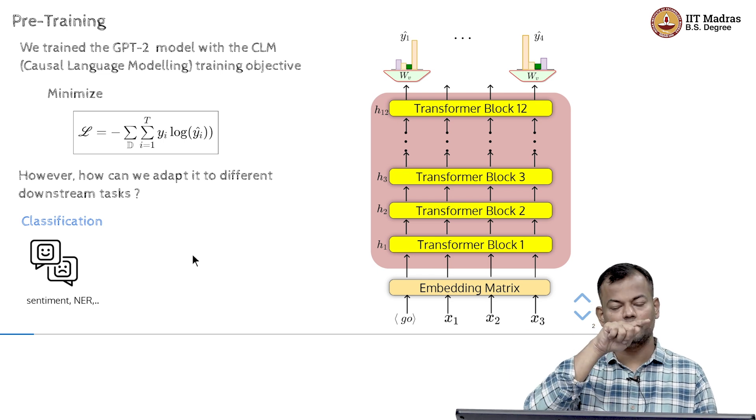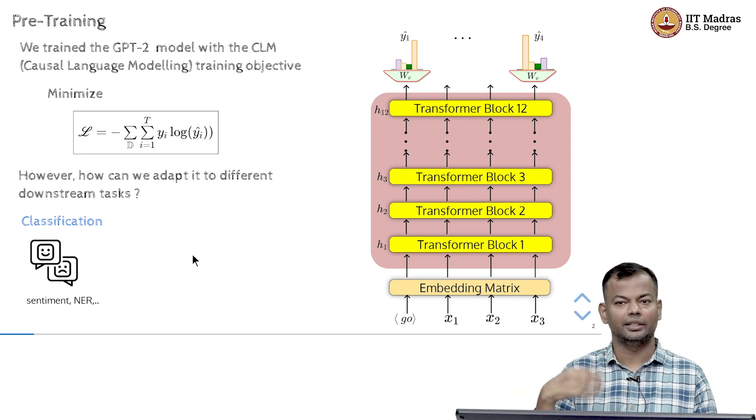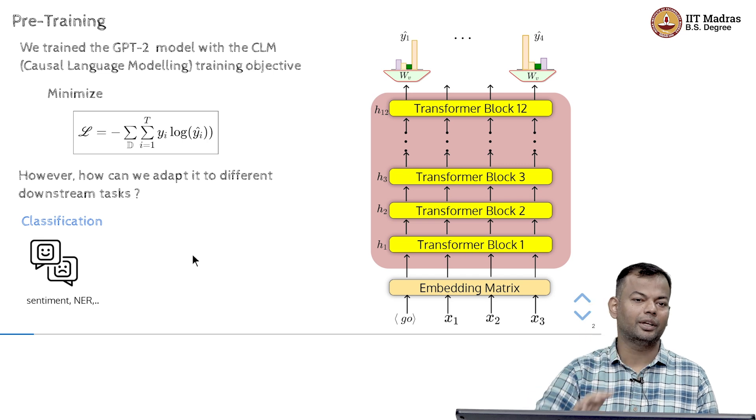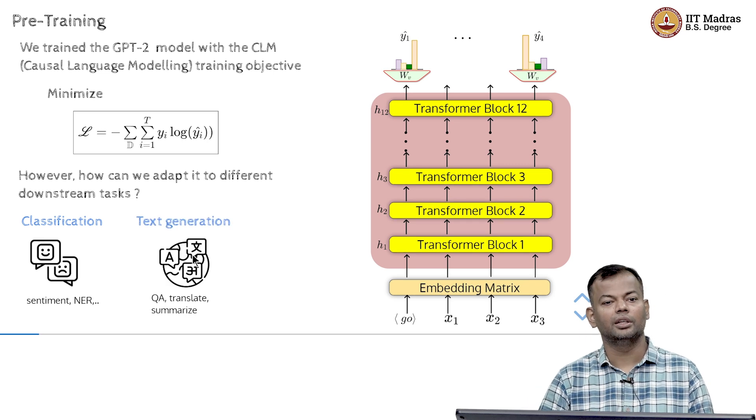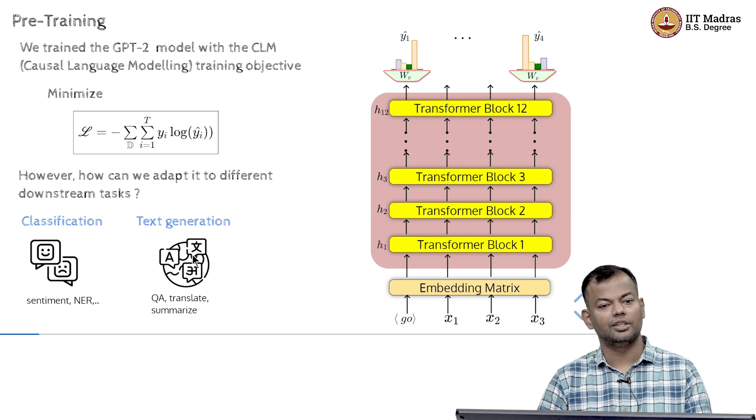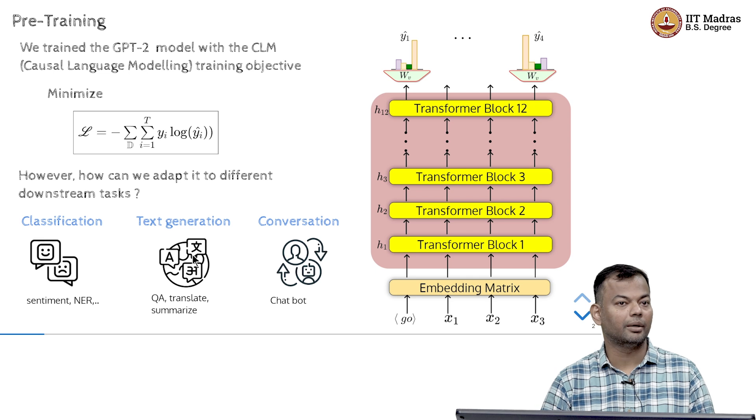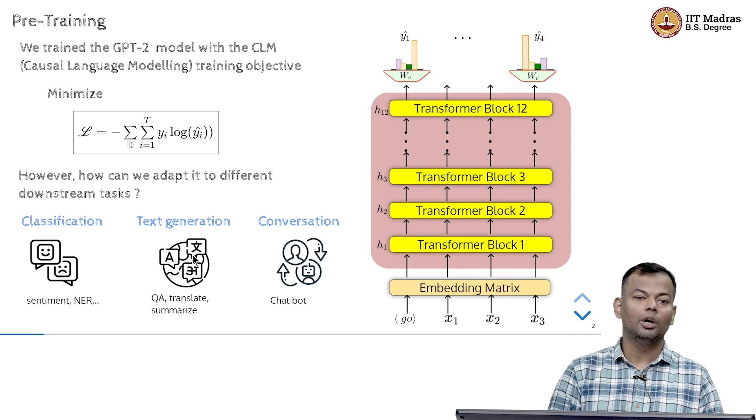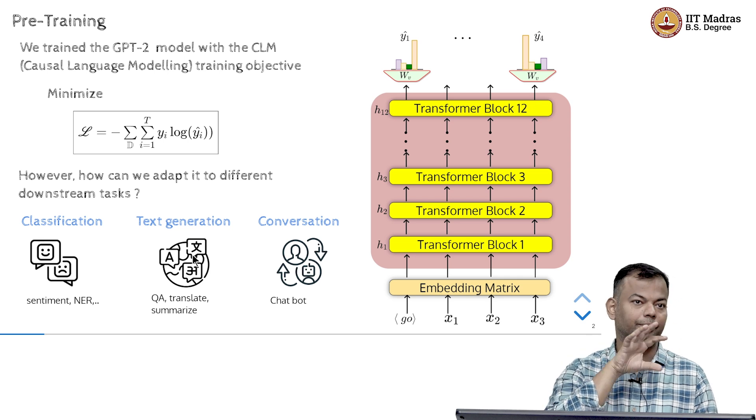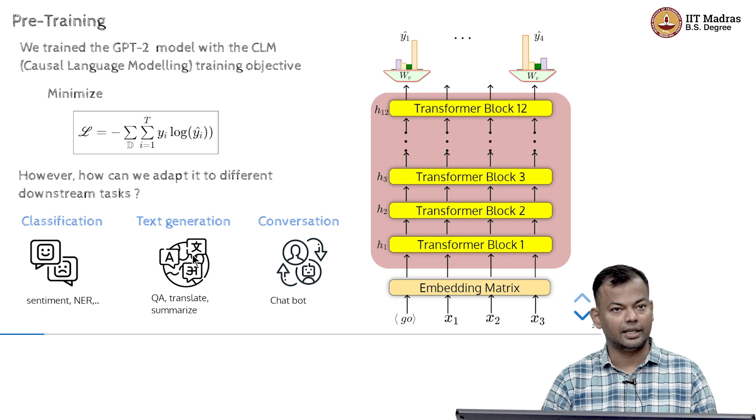Named entity recognition, meaning given a sequence of tokens, identify all the tokens which are named entities and which named entity is it? Is it a name of a person or an organization, date, etc.? Then some text generation tasks like question answering, translation, summarization and even conversational tasks where you are trying to use it in a sort of a chatbot environment. These are all the tasks that modern LLMs are used for. So, how do we go from this sort of pre-training that we did to making it work for all of these tasks?